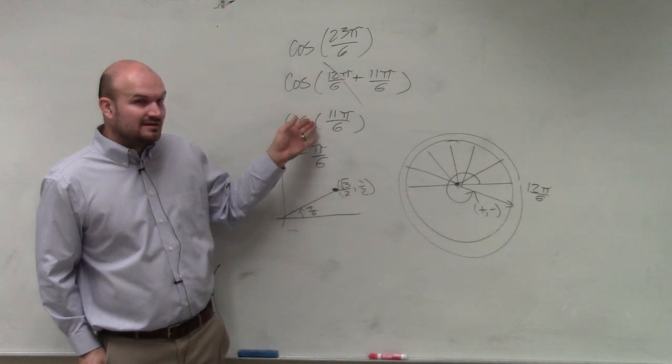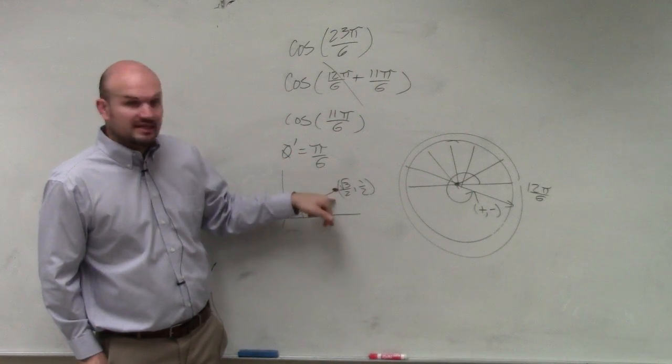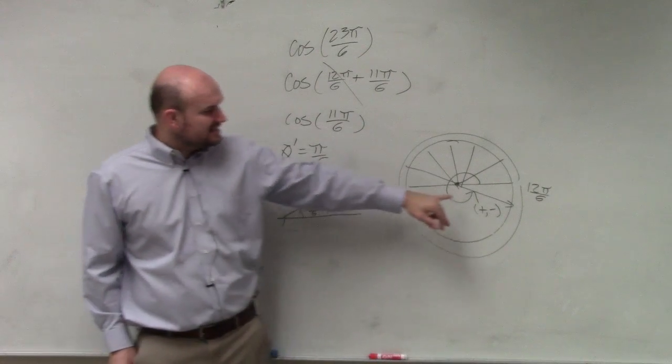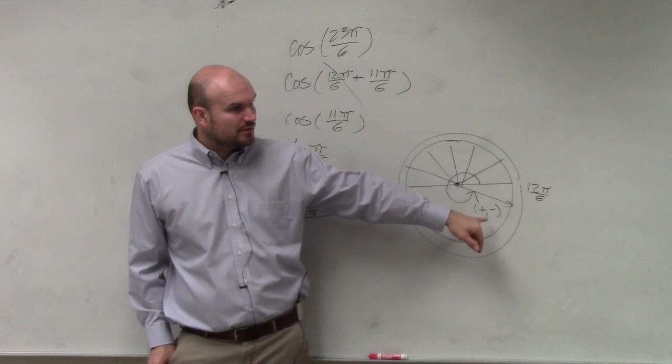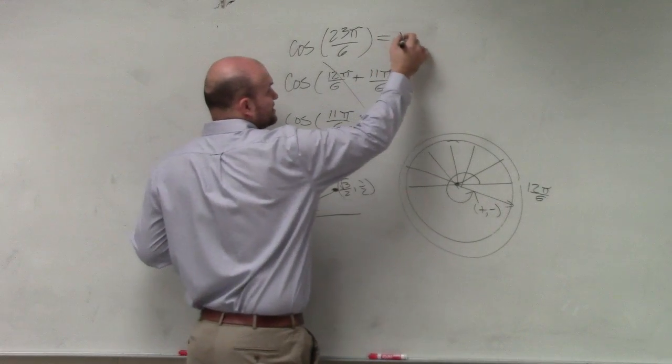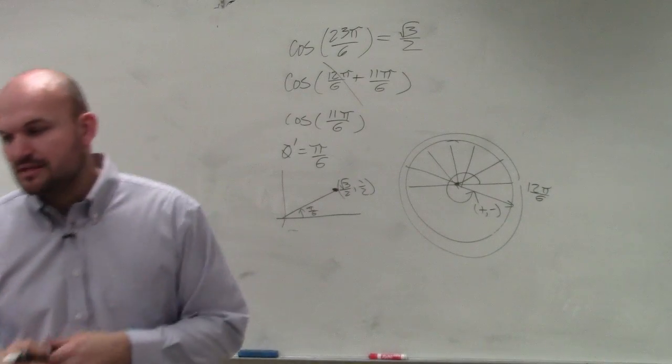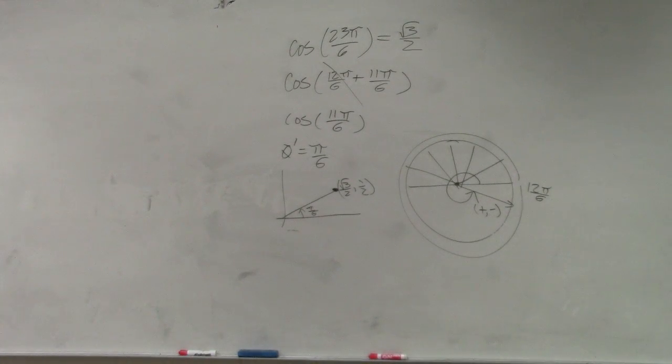And cosine 11π/6 is the same thing as cosine of π/6, which is just the x-coordinate. And is the x-coordinate positive in my fourth quadrant? Yes. So the answer to this is square root of 3 over 2. That's it. Done. Thank you.